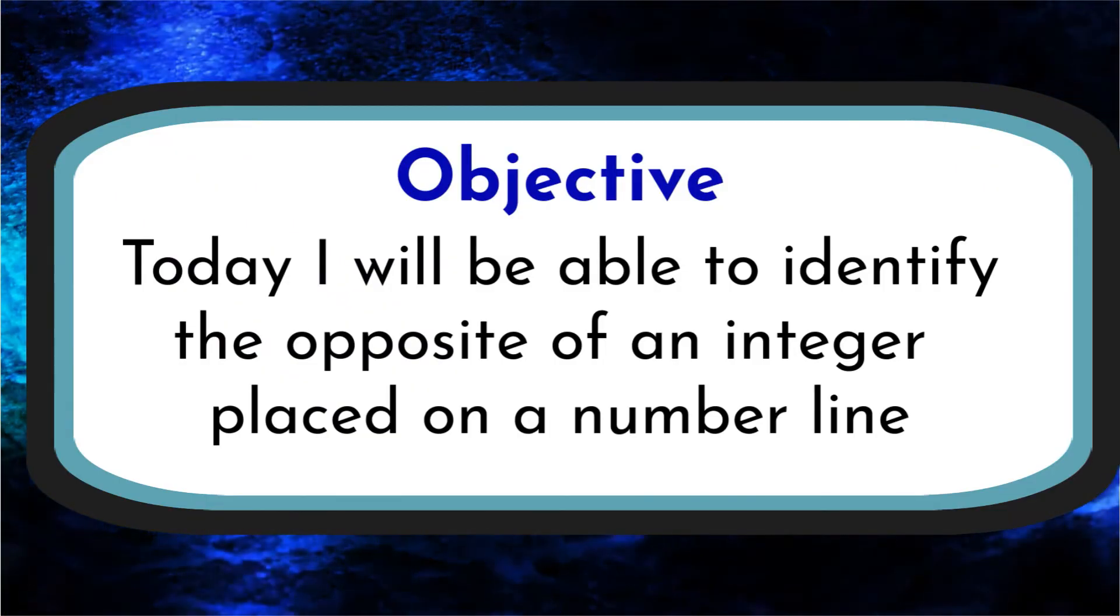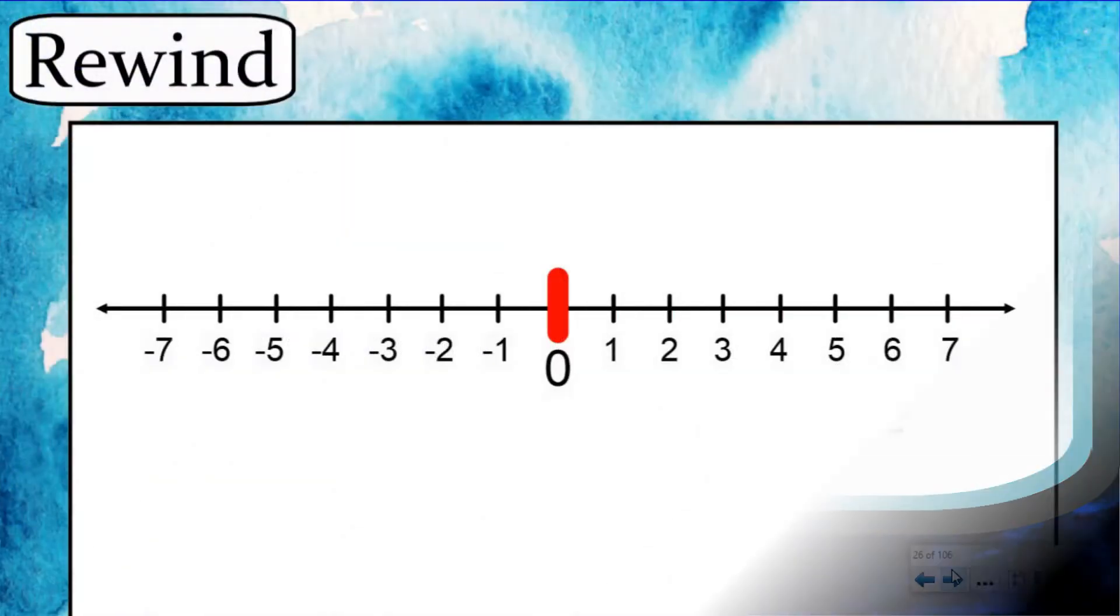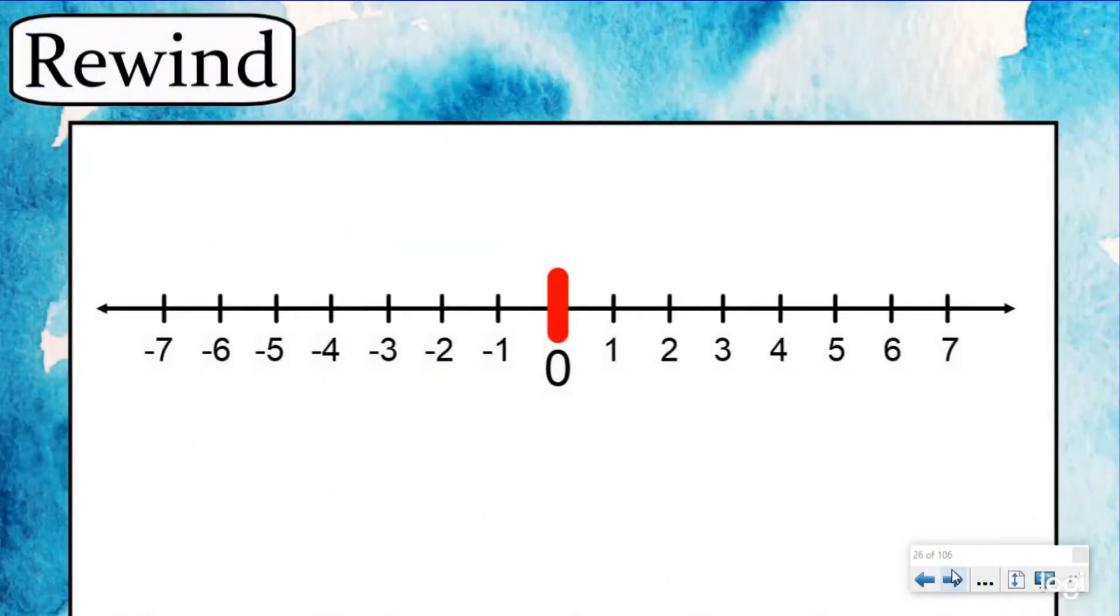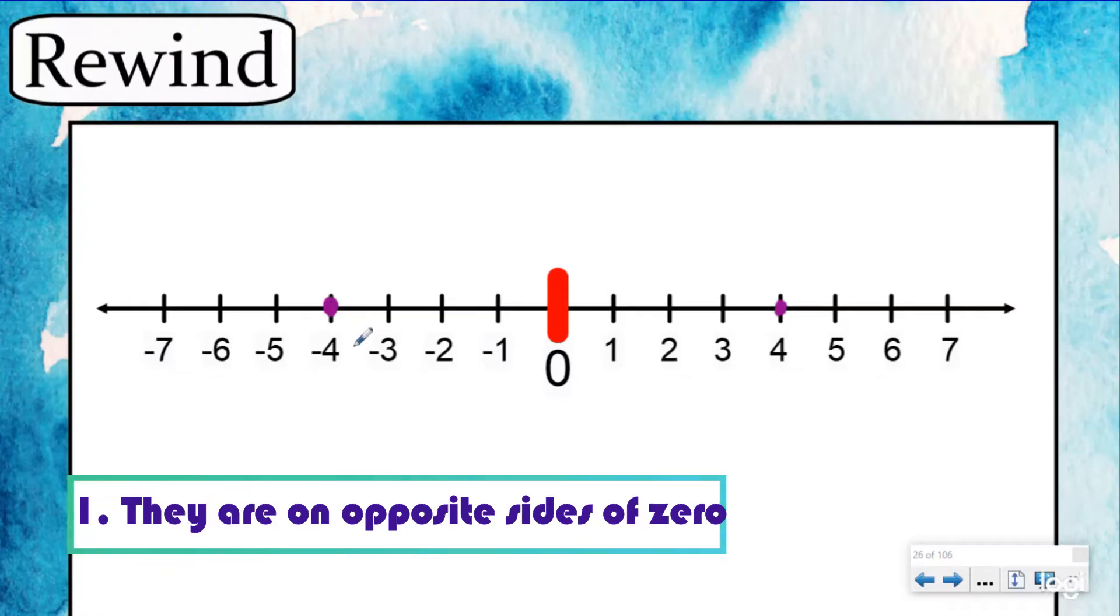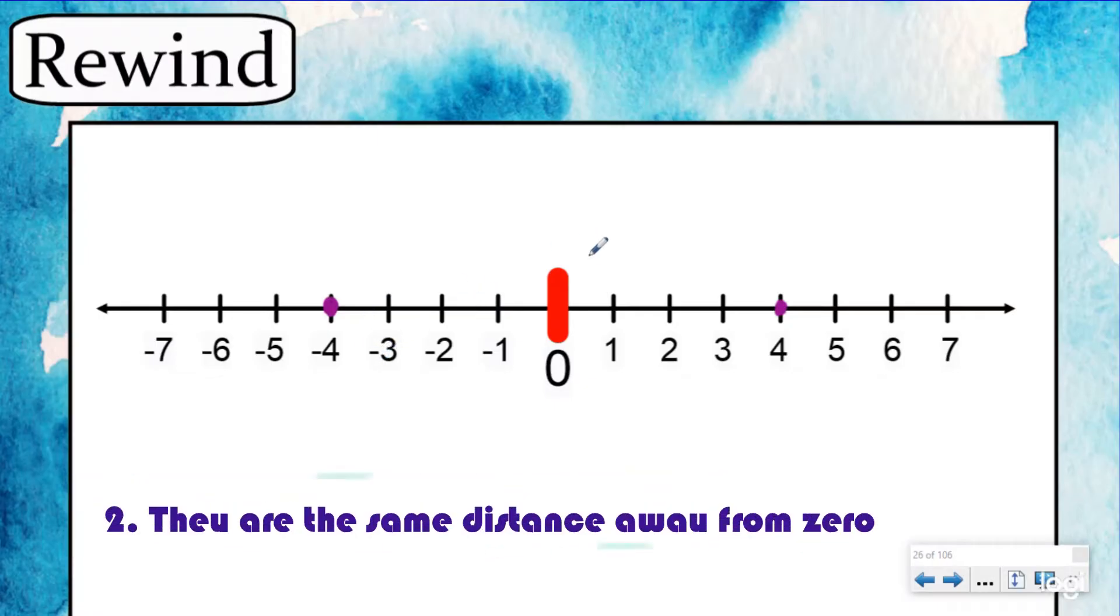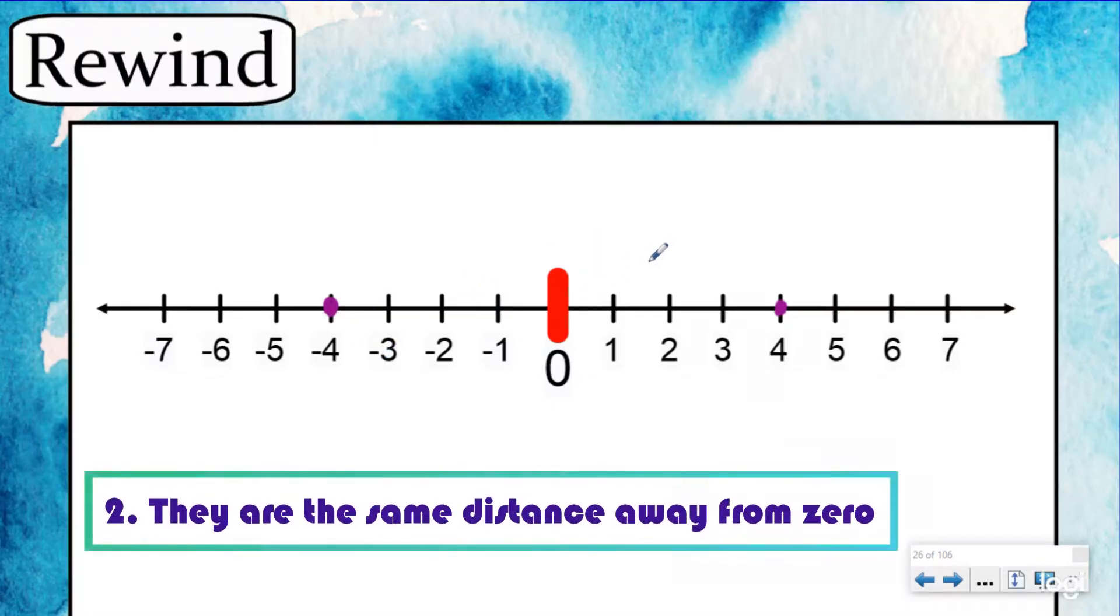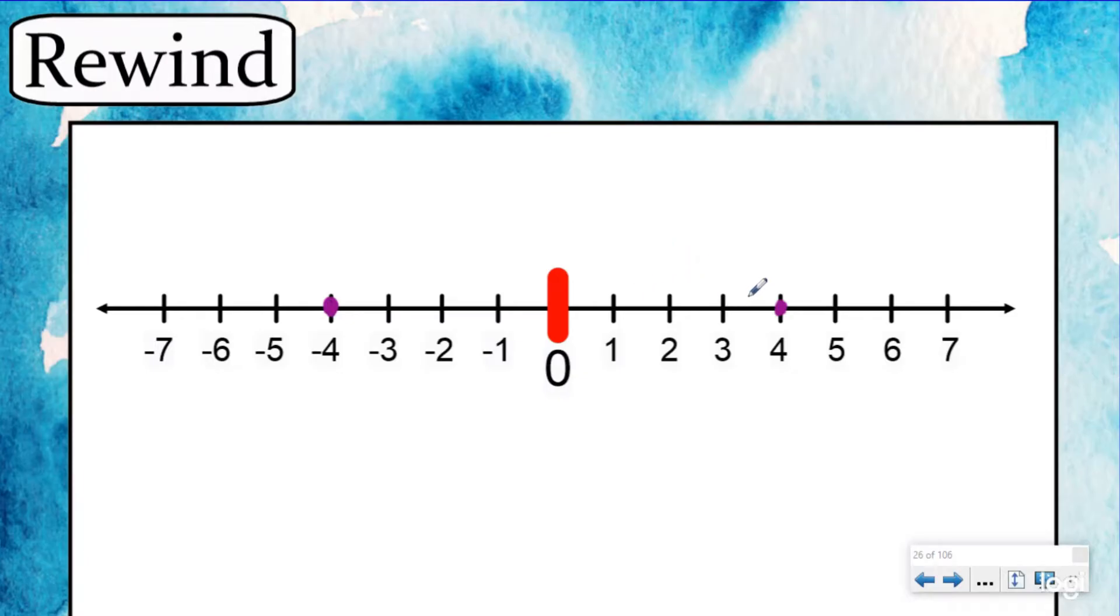But before we do that, we need to rewind and go back to our first lesson with negative numbers, our introduction to negative numbers. When we talked about four and negative four, and we looked at that, we came up with two things. One, they're on opposite sides of zero. And two, they're the same distance away from zero. They're both four units away from zero, just one's to the left and one's to the right.